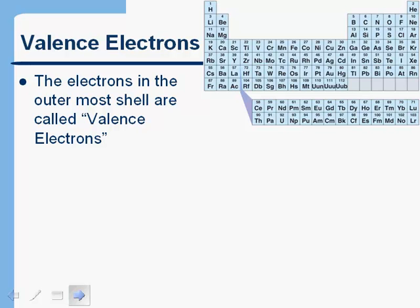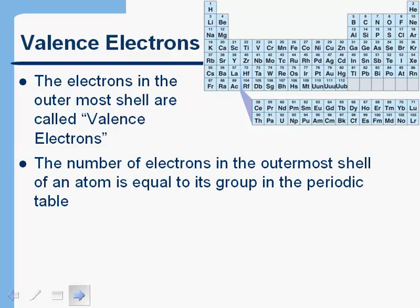So we've talked about the fact that electrons can only be in these certain orbits or certain energy levels, which we call electron shells. The electrons that are in the outermost shell are called valence electrons. And the reason that that's important is something we'll see here in just a minute. So the number of electrons in the outermost shell is just equal to its group in the periodic table. So, for example, hydrogen has one valence electron. It actually has one electron. That's it.